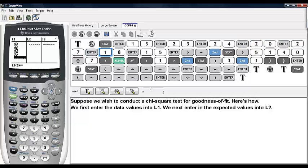Now we'll enter the expected counts. I'm using the SEQUENCE command here so that I only have to enter it once and the calculator will do the rest. We have our observed values in L1 and our expected values in L2.